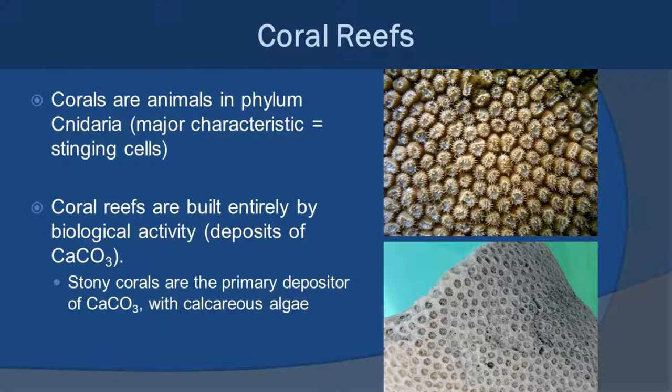Corals are animals. This stumped early ecologists and biologists because they sort of look like plants underwater. As it turns out, they actually have plant cells — basically algae — living inside them. But they really are animals. Corals are members of the Phylum Cnidaria, and the major characteristic for cnidarians is stinging cells, which you might know if you've ever been stung by a jellyfish, because jellyfish are also in Phylum Cnidaria.